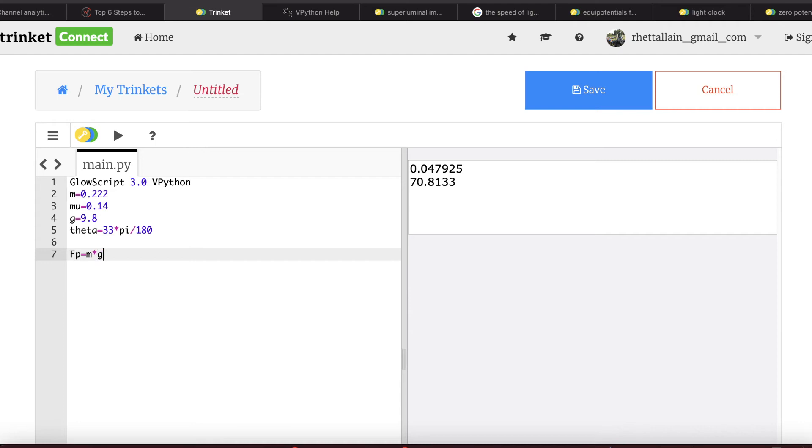So now I can say print Fp equals Fp, and let's put newtons because technically it is. And run it. And I get a force, I'm writing it down over here, 1.0159 newtons. Okay, let's switch back to the paper.